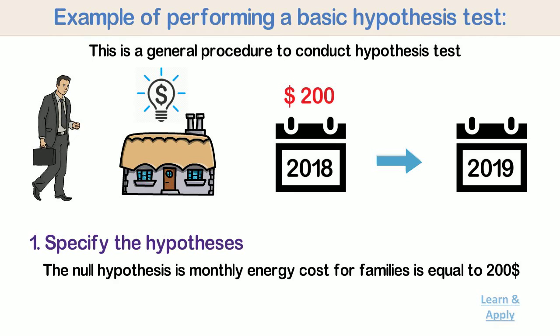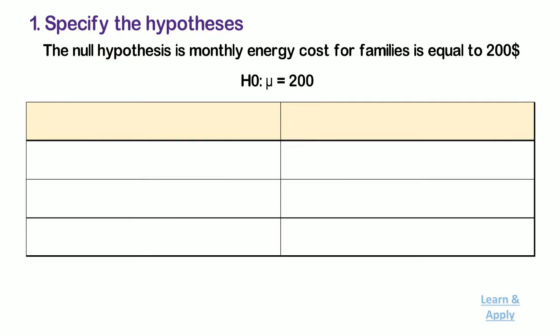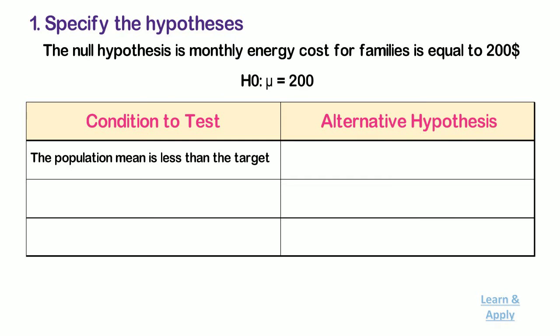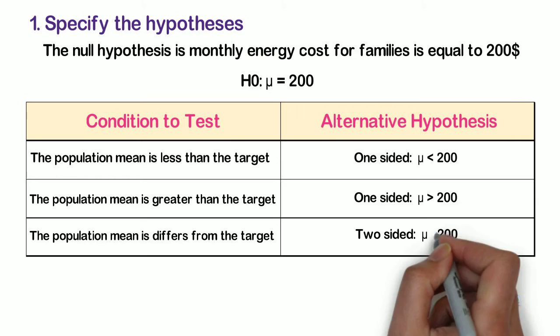Then, the economist selects from the following alternative hypotheses. Condition to test: the population mean is less than the target, and alternative hypothesis is one-sided μ < 200. Second, the population mean is greater than the target, and alternative hypothesis is one-sided μ > 200. And third, the population mean differs from the target, and alternative hypothesis is two-sided μ ≠ 200.